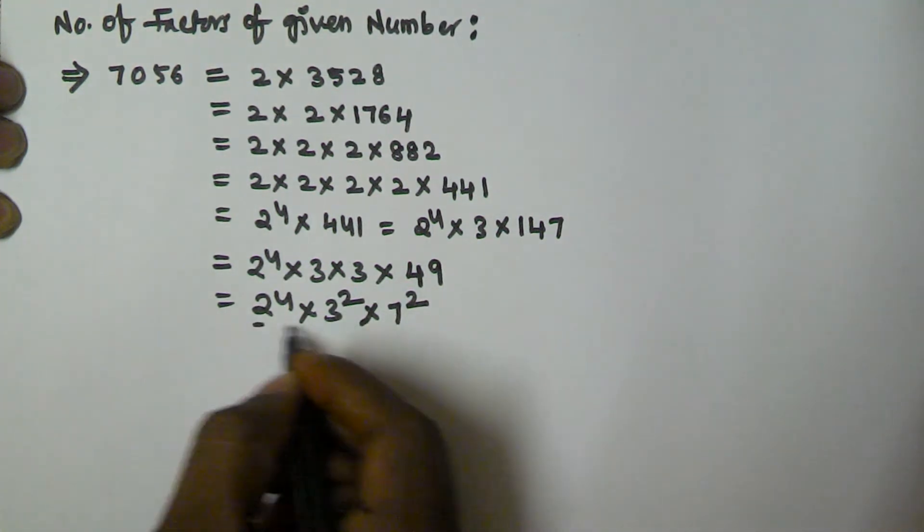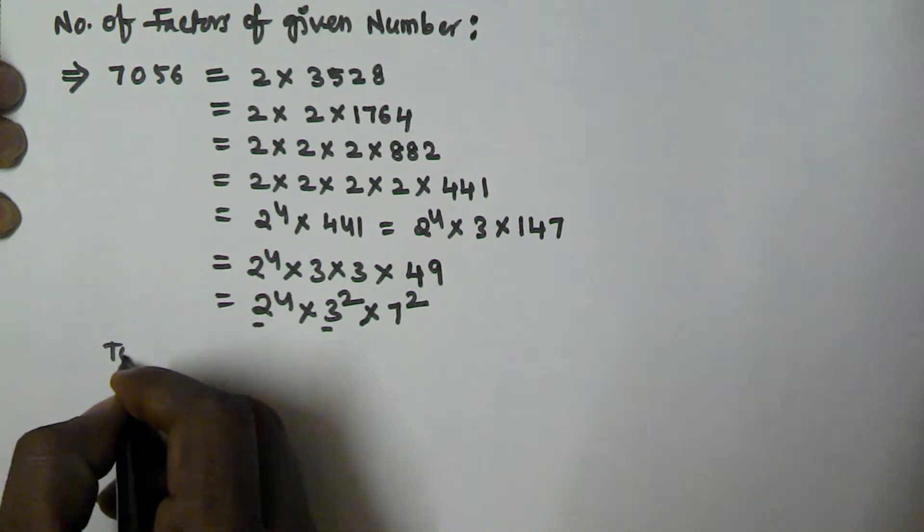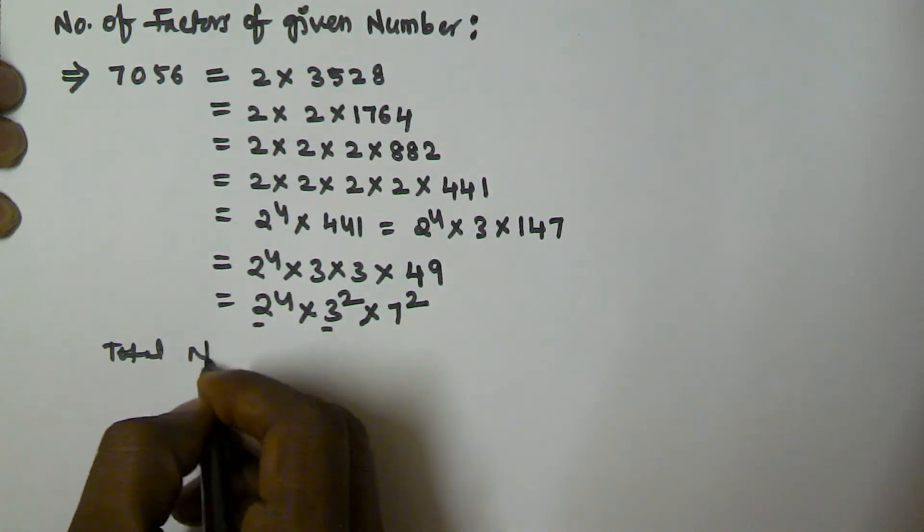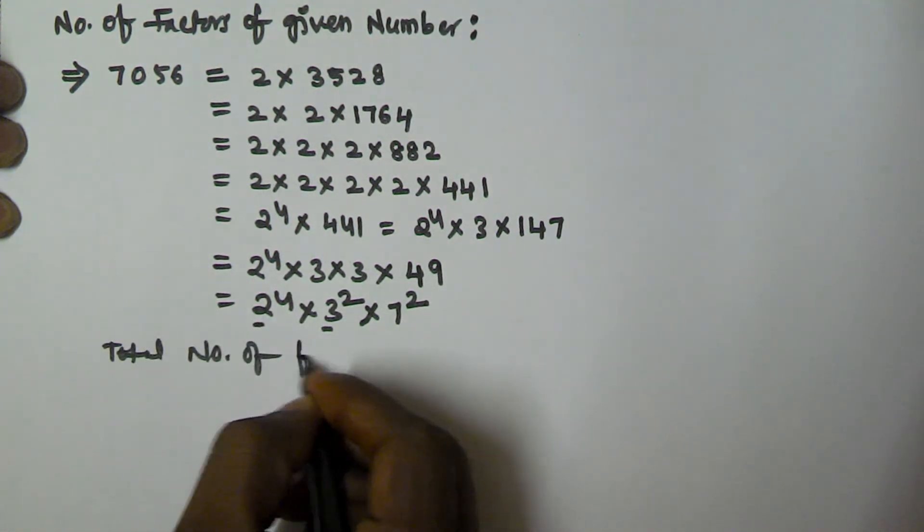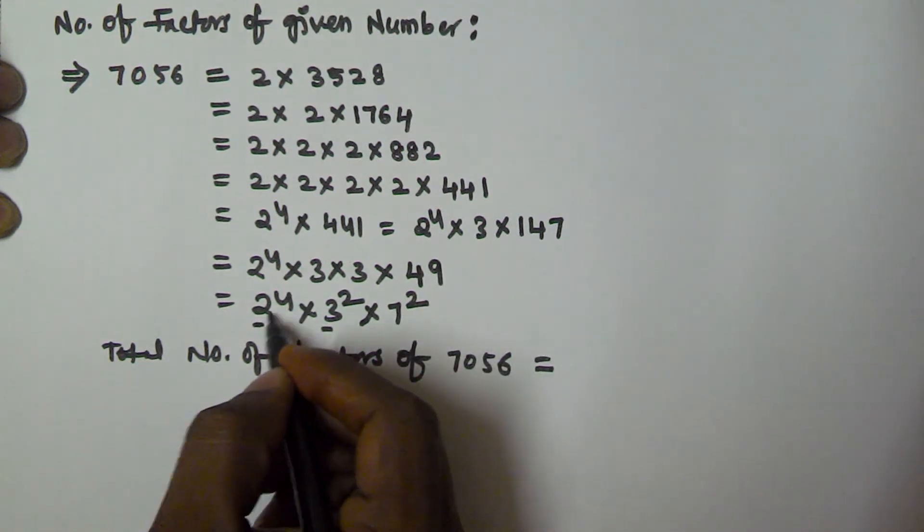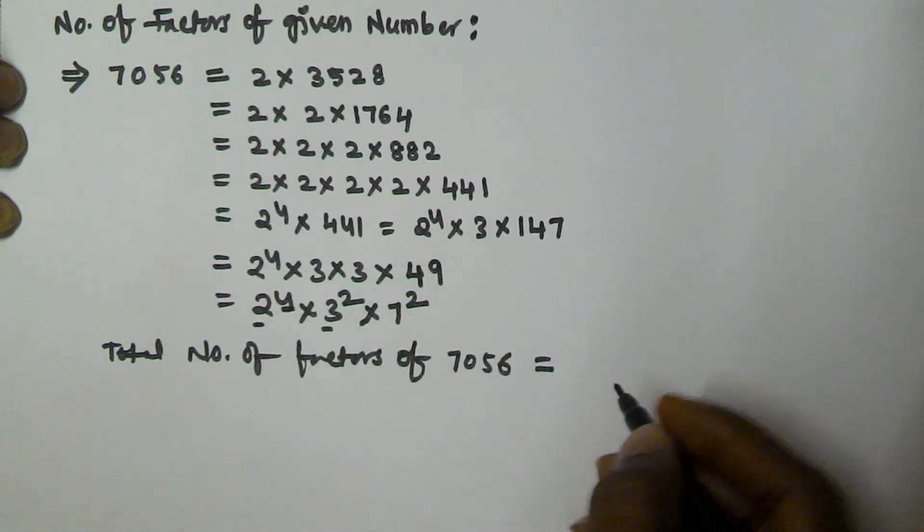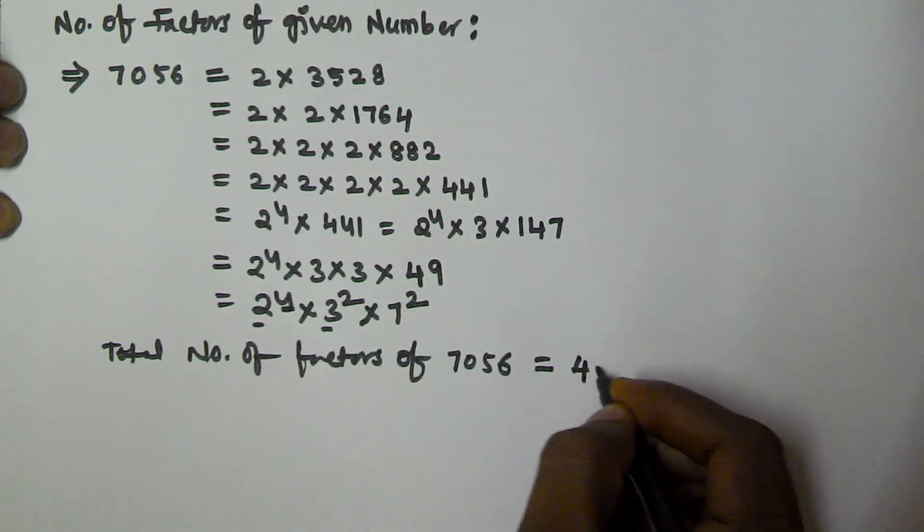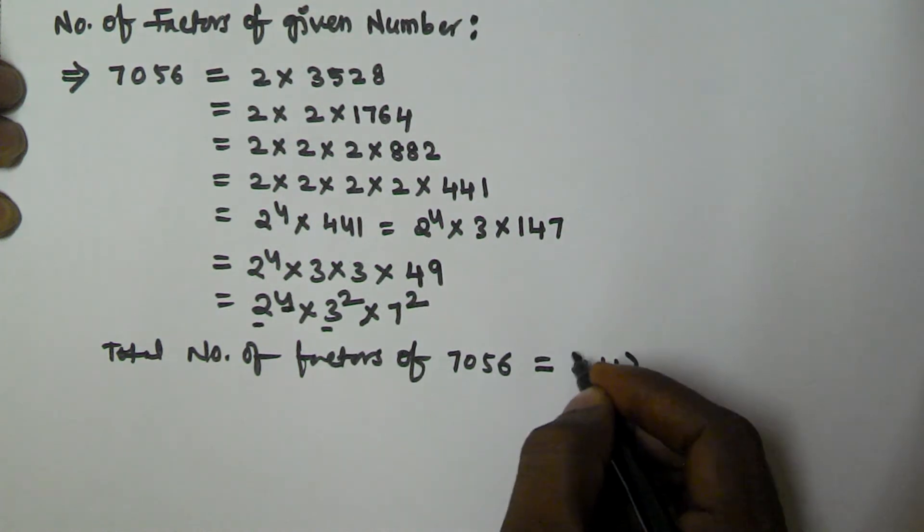Okay, so now the total number of factors of 7056 is equal to: we got 2 to the power of 4, we take this 4 and we add 1, and then this is multiplied by...